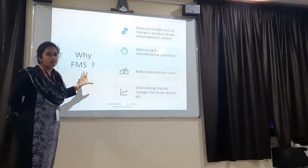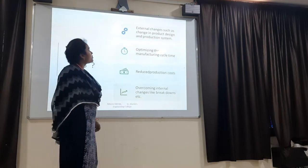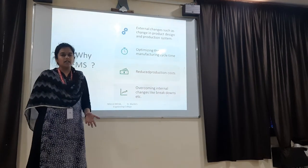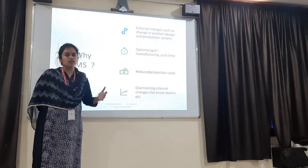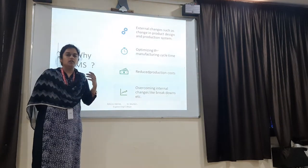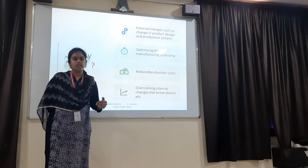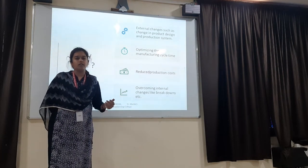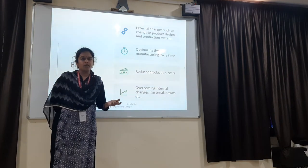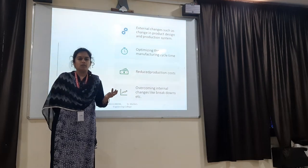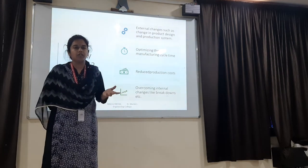Why FMS? Why are we introducing an FMS system in manufacturing? First, external changes such as change in product design and the production system — you can easily change any product design or production system. If you want to change the route sheet, using that computer control you can change it. After changing, the job finishes and comes out. In the same computer you can also apply inspection techniques and see the quality of that final product. After undergoing any heat treatment process, the material properties change — physical properties such as ductility and brittleness will change.